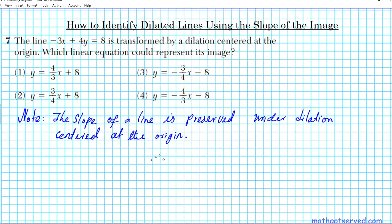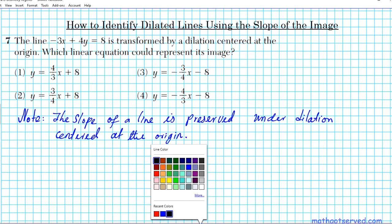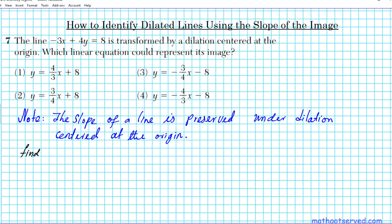The original line and the image after dilation have exactly the same slope. So what we want to do is find the slope of this original line and see which of these lines has a slope that matches. We're going to find the slope of negative 3x plus 4y equals 8.